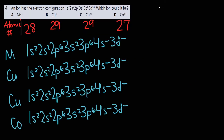An ion has the electron configuration 1s2 2s2 2p6 3s2 3p6 3d10 — which ion could it be? I'll write out the ground-state electron configurations for each candidate and then remove electrons to form the ion. All these metals share the [Ar] core, which accounts for 18 electrons. So we need atomic number minus 18 additional electrons. For nickel (Z=28), we want 10 more, giving 4s2 3d8.